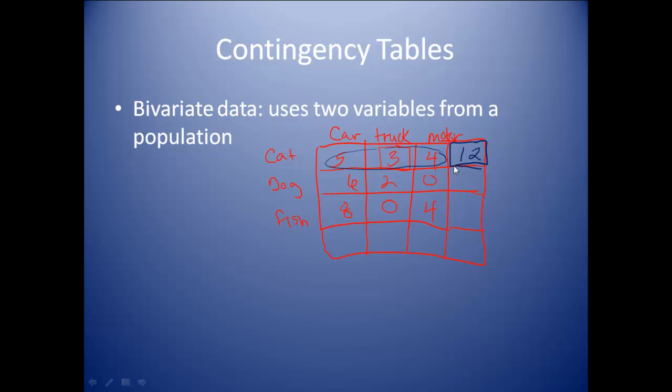Now, the box right here underneath of it represents all the people who have dogs, so that would be eight. This one right here represents all the people who have a fish. This one would also be a 12.